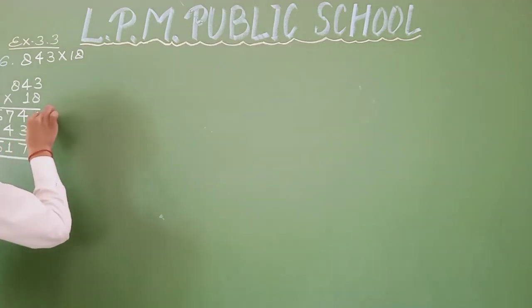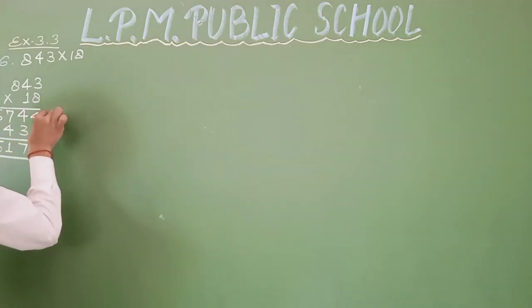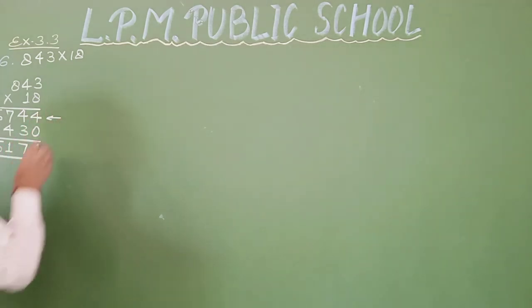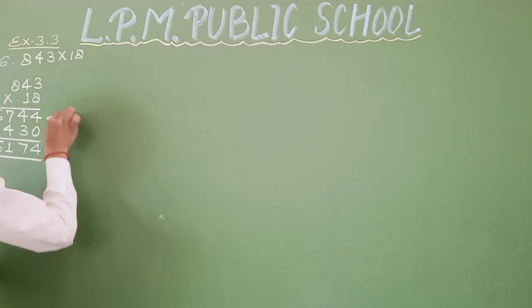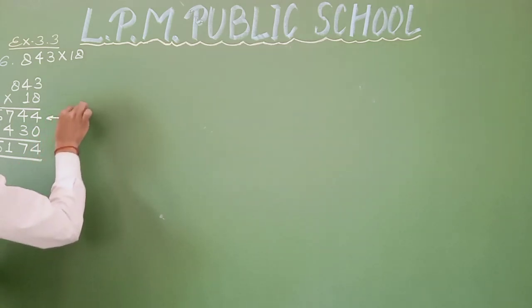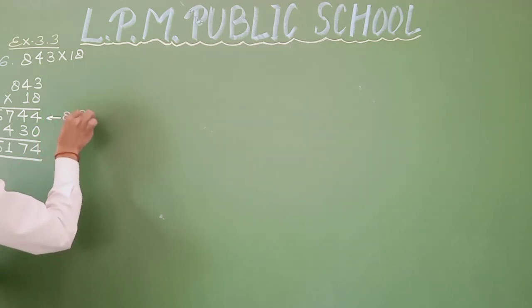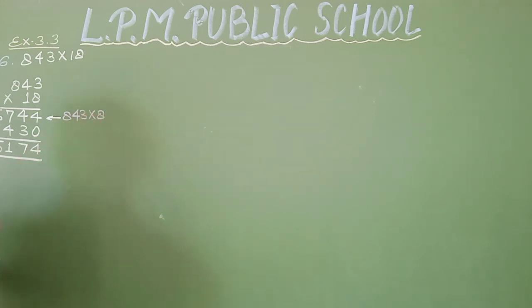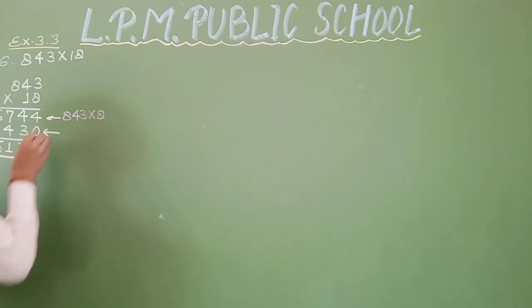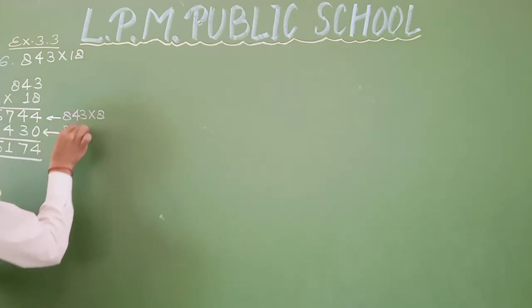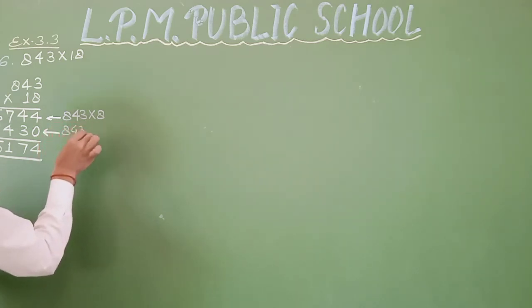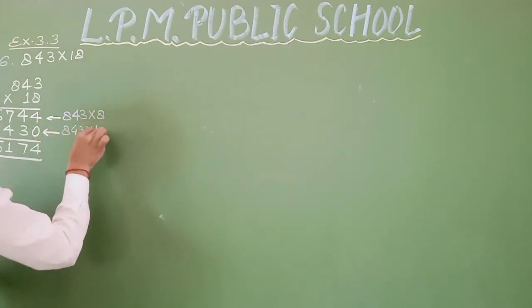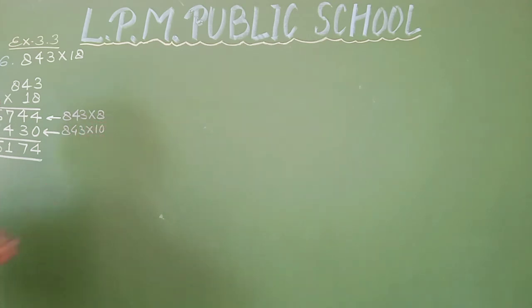That is 843 multiplied by 8 ones, and 843 multiplied by 10.